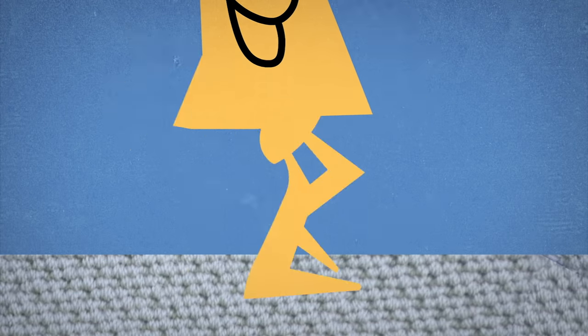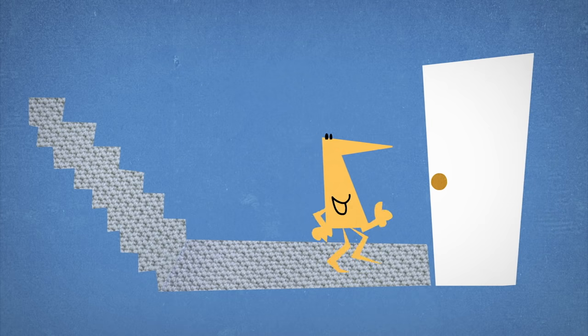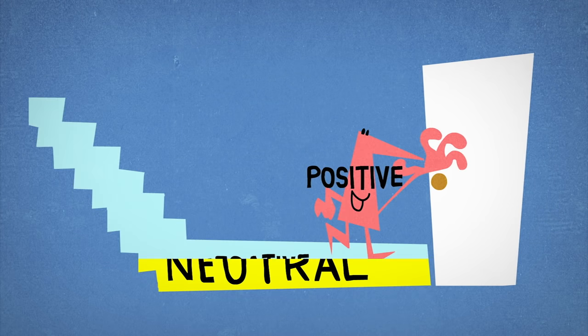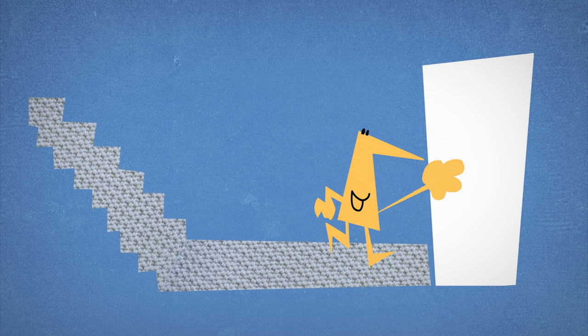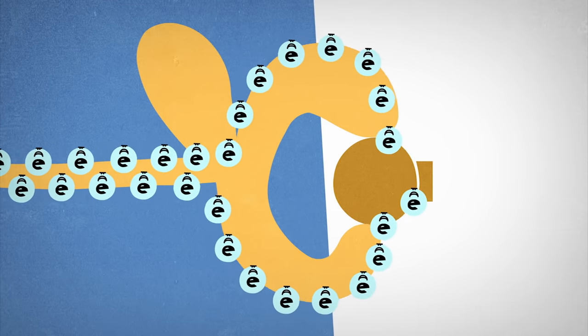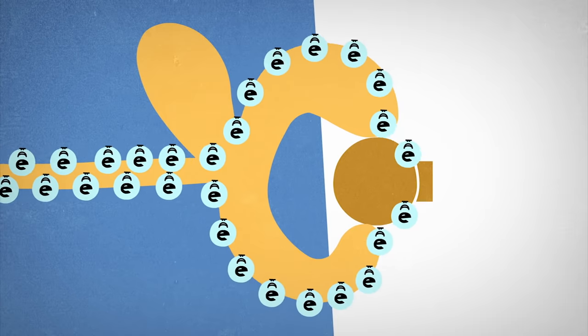Although your body and the rug together are still electrically neutral, there is now a charge polarization between the two. And when you reach to touch the doorknob, zap! The metal doorknob's loosely bound electrons hop to your hand to replace the electrons your body has lost.